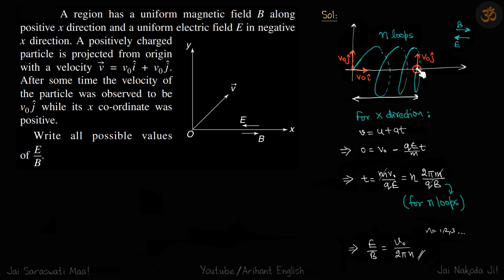At one point, its velocity in the x-direction will be 0, and at that point it is given that its velocity is v0 j-cap, which is the same as initial. That means it has just completed a loop and has come back to the axis.